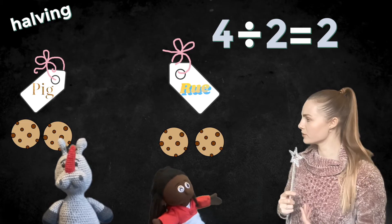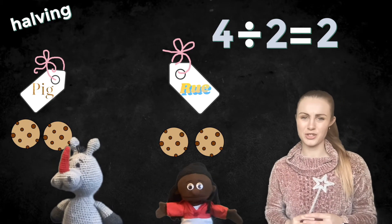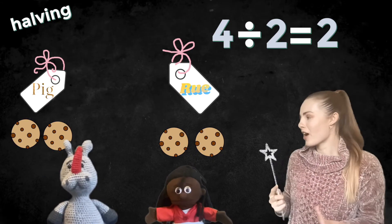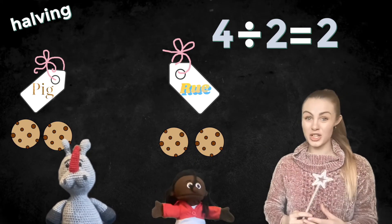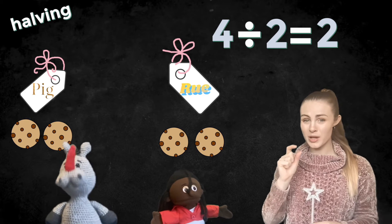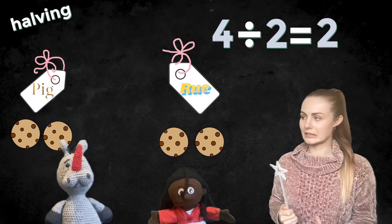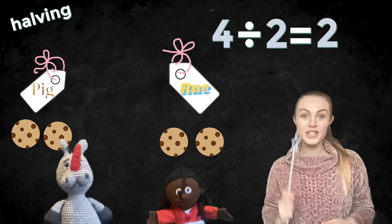What's that Roo? Roo's not very happy because now she's ended up with less cookies than she started with. Well that is what happens when you do division, Roo. You always end up with a smaller number. How can we solve that problem? I know. Let's try doubling.